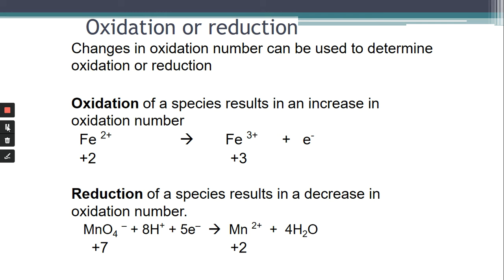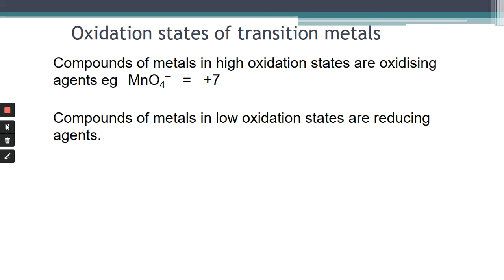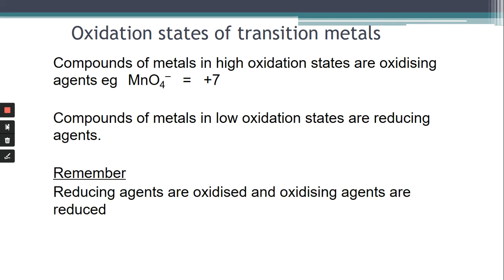We can see that the electrons are on the left hand side, which also indicates reduction, but most important to us is the change in the oxidation number. In Higher we used the electrochemical series to decide if something was a good oxidising or reducing agent. If we've got a metal in a high oxidation state it's going to be a good oxidising agent, whereas if the metal is in a low oxidation state it's going to be a reducing agent. A reducing agent is itself oxidised, and an oxidising agent is itself reduced.